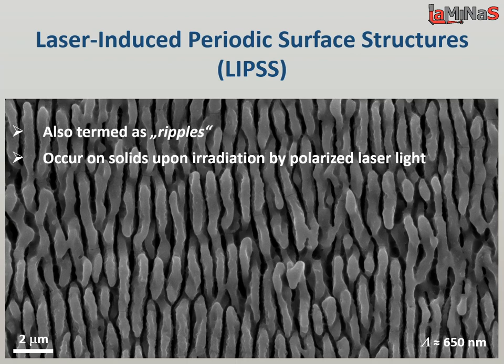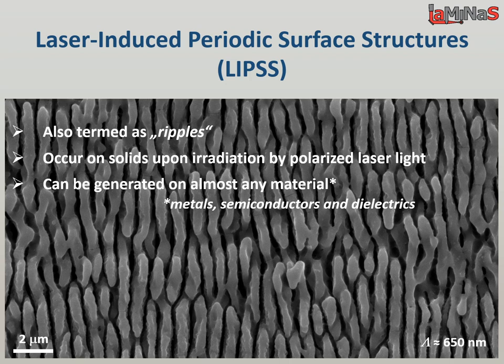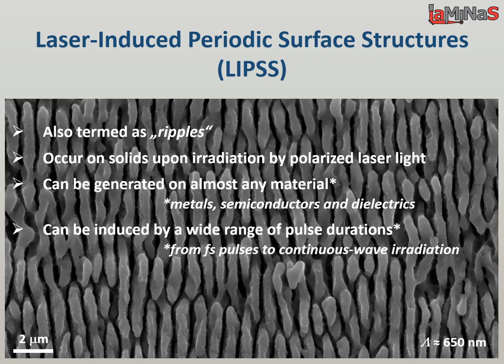They occur on solids upon irradiation by polarized laser light, and can be generated on almost any material, including metals, semiconductors and dielectrics. LIPSs can be induced by a wide range of pulse durations, from femtosecond pulses to continuous wave radiation at fluences near the threshold fluence for surface ablation.